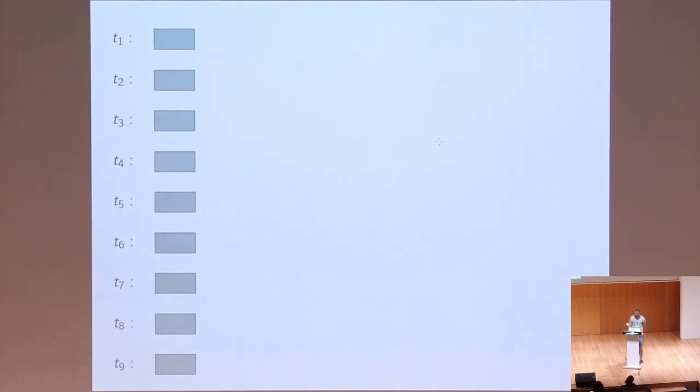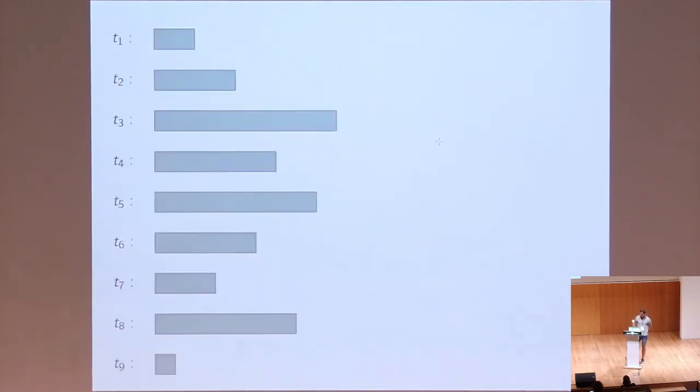But it might be not the case. What if some items here are more easy to check than others? In fact, that is not uncommon in many applications. Say, we have this kind of distribution of times per each item.